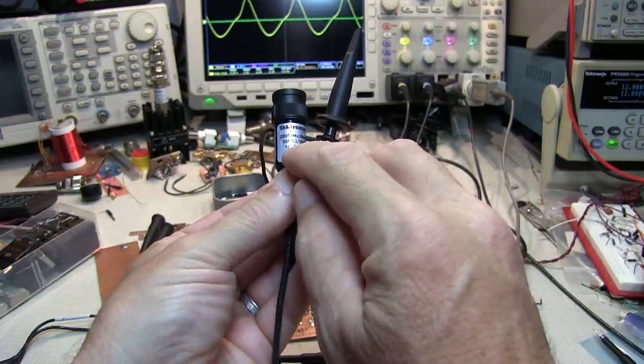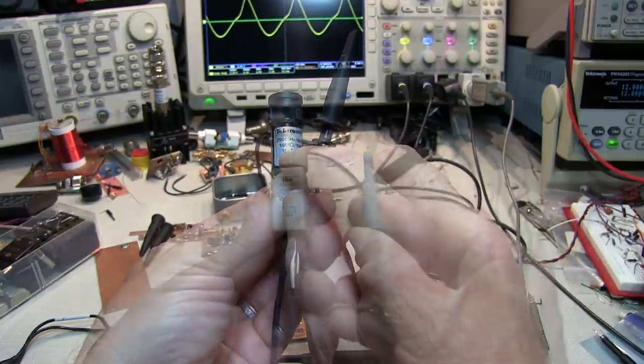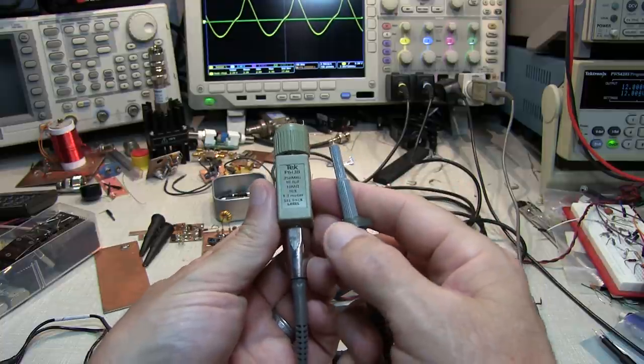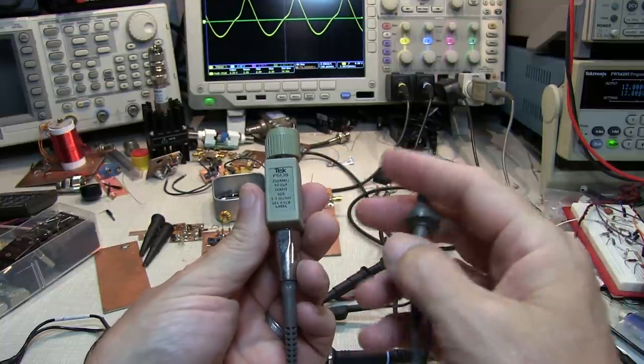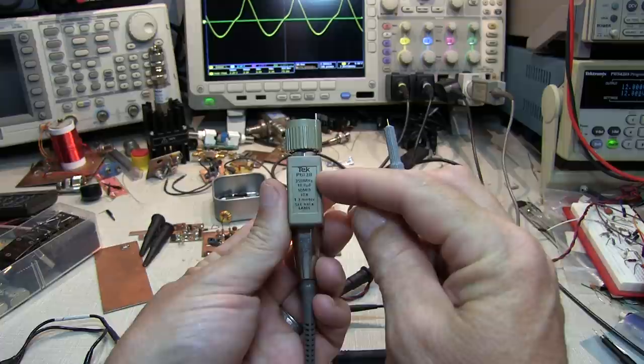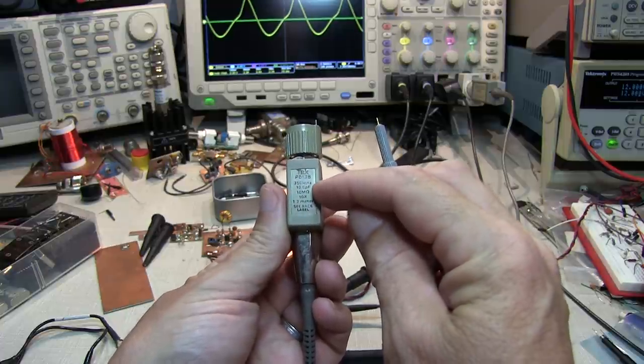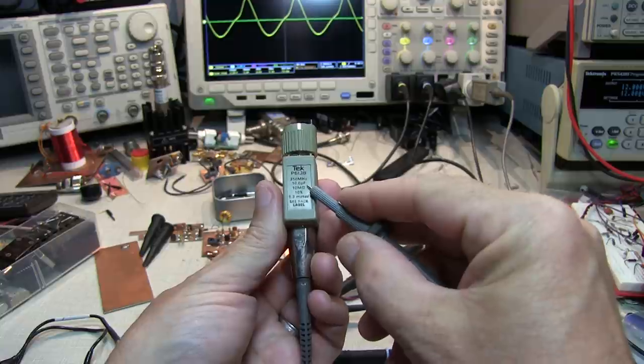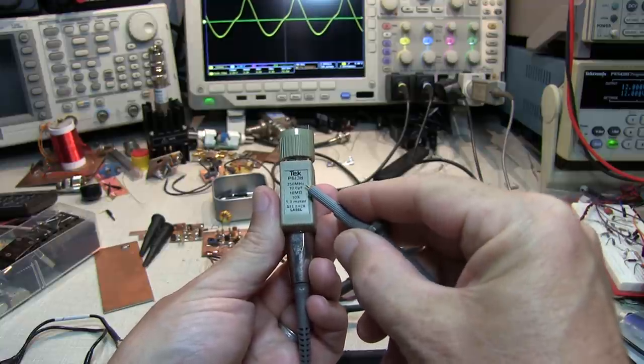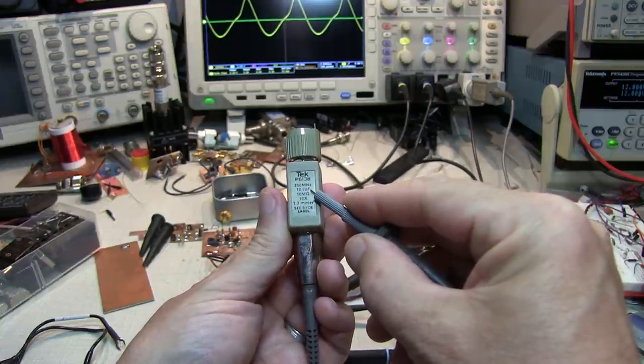But even that 16 picofarads might make a difference. Now, higher performance passive probes will generally have lower capacitive loading. This older P6138 is a 350 MHz probe, again, 10 megaohm input impedance, but the capacitive loading is just 10 picofarads. It's starting to sound pretty good.